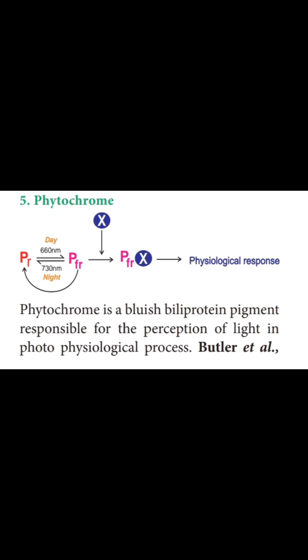The first form is PR, the red light absorbing pigment, which absorbs light at 660nm.